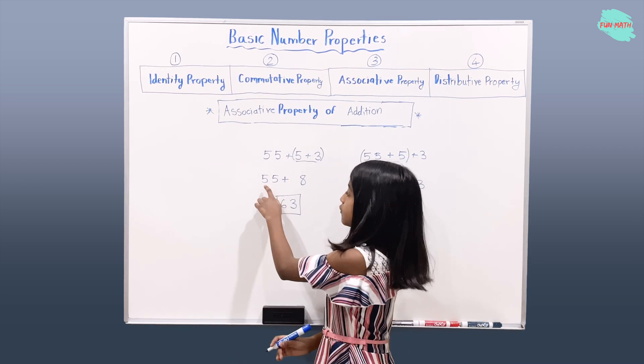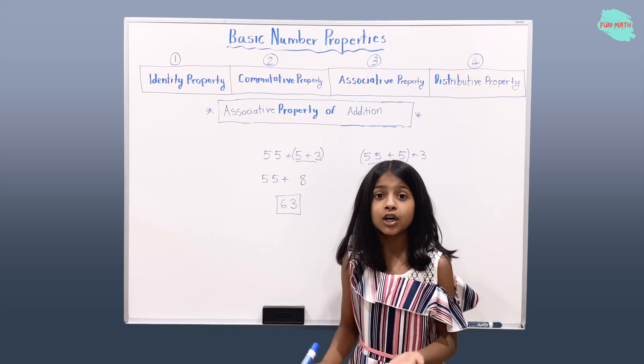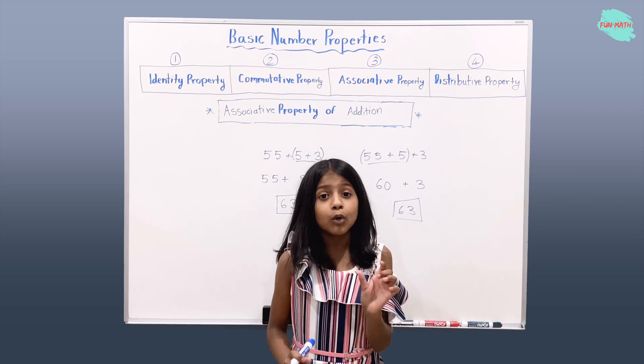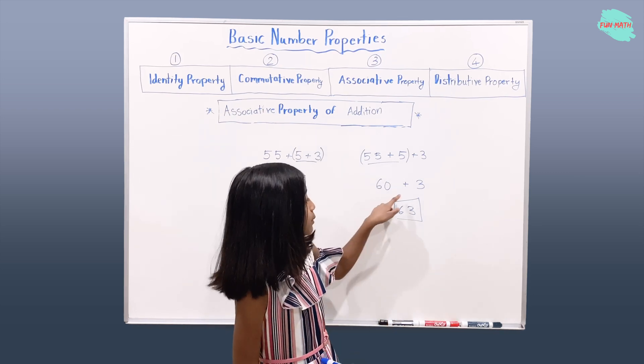And here, 55 is not a round number. Neither is 8. So it's going to take a little bit more time than 60 plus 3.